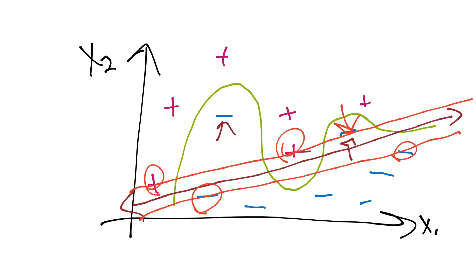Having fewer support vectors is in theory better because you have less overfitting. Overfitting is inherently bad — if you overfit to historical data, future data is going to have noise and be different from your past data. If you fit the past data perfectly, you're going to do poorly on future data. You'll know this if you do training and testing, which we've already covered.